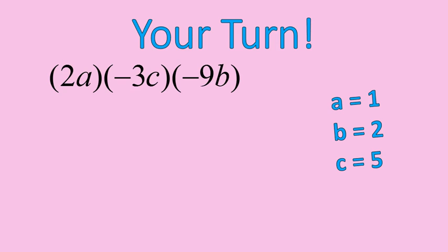So now it's your turn. I want you to pause the recording. Substitute a equals 1, b equals 2, and c equals 5 into this expression: 2a times negative 3c times negative 9b.